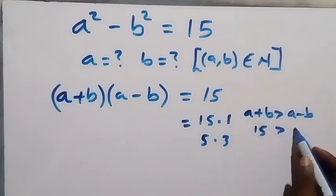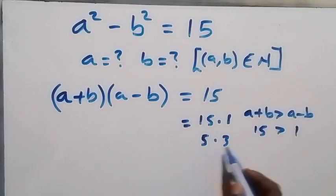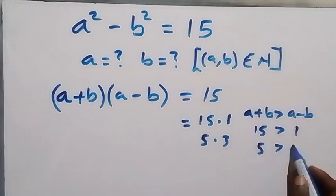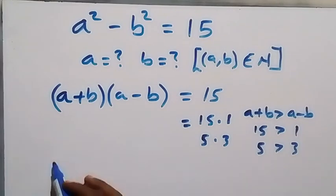15 is greater than 1, which is a-b. For the second case, 5 will be for a+b, which is greater than 3 for a-b. So we can separate this into two categories.